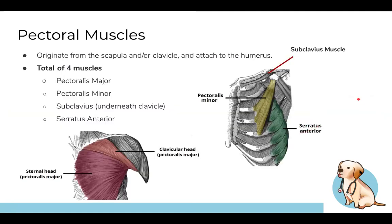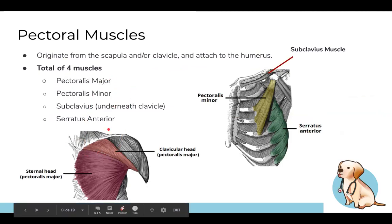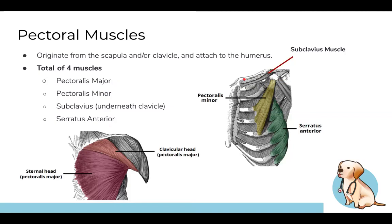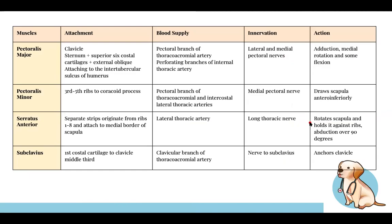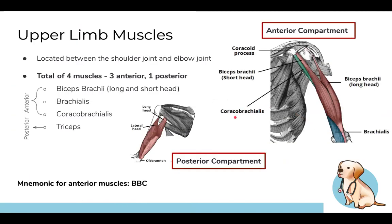Pectoral muscles — four in total. Pectoralis major is the large chest muscle. Underneath is pectoralis minor. Subclavius sits underneath the clavicle — the name tells you its position. Serratus anterior attaches to the ribs. A table covers the details for all of these.